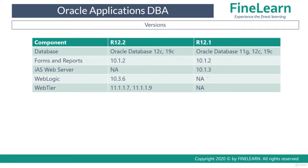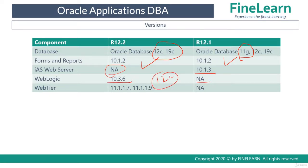Now let's see what are the certified versions. For the database, versions certified for Release 12.2 are 12c and 19c, whereas 11g is additionally certified for Release 12.1. Forms and Reports both use 10.1.2. IAS web server 10.1.3 is used only in Release 12.1, not in 12.2. WebLogic is used only in Release 12.2 at version 10.3.6 — note that WebLogic 12c is still not certified with Oracle E-Business Suite. Web tier is part of Release 12.2 and is certified with versions 11.1.1.7 and 11.1.1.9, but all latest implementations use only 11.1.1.9.